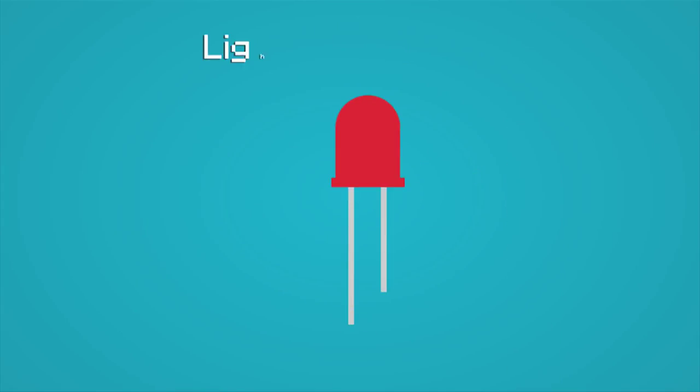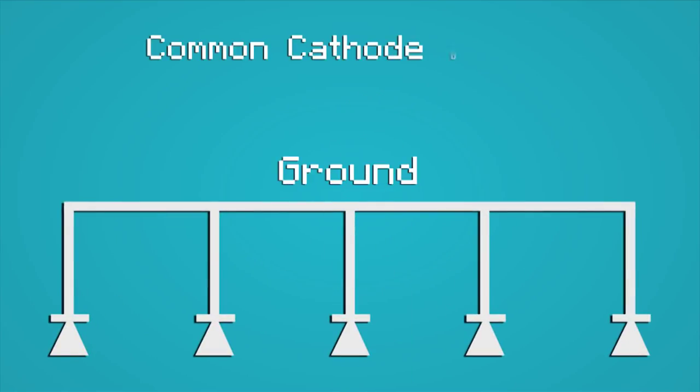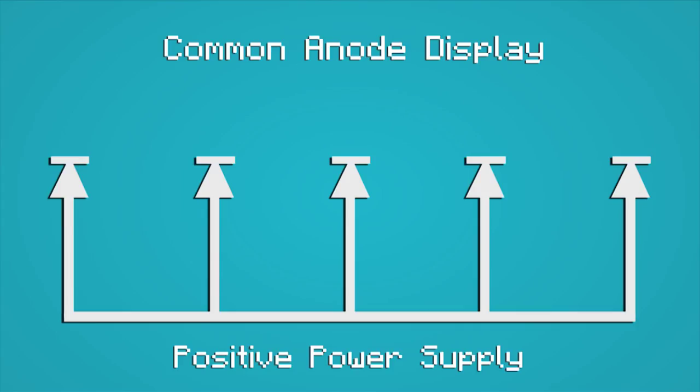LEDs are a lot like diodes. Like all diodes, they have two connecting pins, one called the anode and the other called the cathode. LEDs in a display can be arranged in two different ways. For instance, in a common cathode display, all the cathodes or negative terminals of the LEDs in the display are connected directly together to ground or negative power supply. However, in a common anode display, all the anodes of the LEDs are connected directly together to the positive power supply.